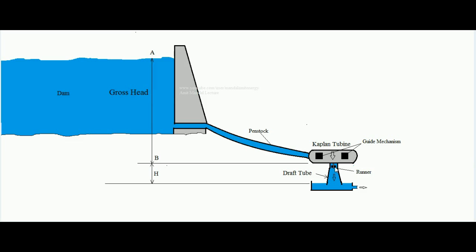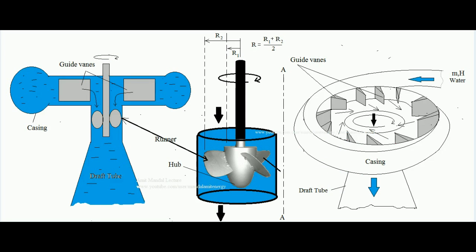One thing we can learn here is that the Kaplan turbine is a reaction type of turbine. Reaction means it runs on the pressure energy of water — the pressure falling over the blade of the runner drives it to rotate in a corresponding direction, and this is how power is developed. Second, it is an axial flow machine, meaning the flow of water through the runner is along the axis of the runner.